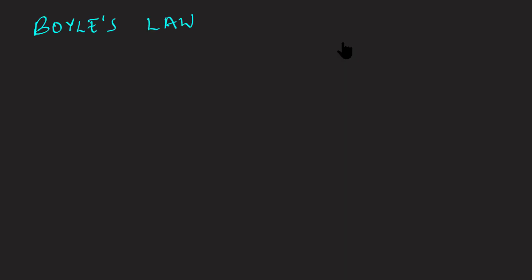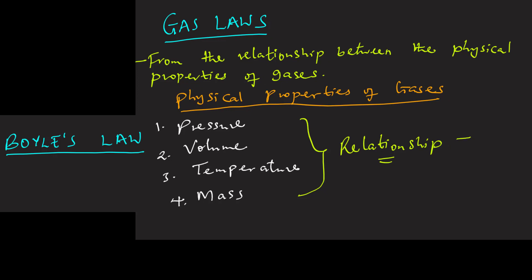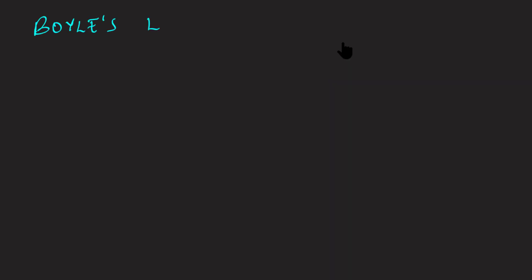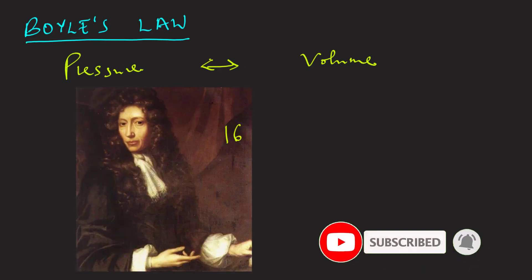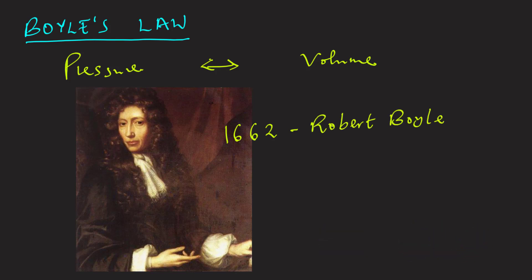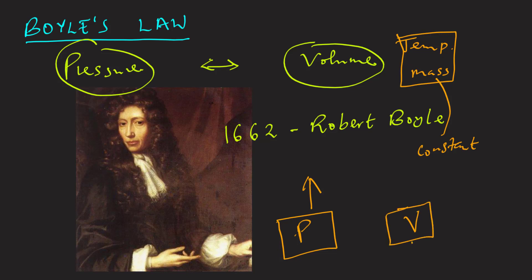Let's start with Boyle's law. As we have already said, various gas laws arise from the relationship between the various physical properties of gases. Boyle's law looks into the relationship between pressure and volume. In the year 1662, a scientist by the name Robert Boyle studied the relationship between pressure and the volume of a fixed amount of gas while holding the temperature constant. Boyle observed that when he increased the pressure of the gas, there was a decrease in the volume, and when he reduced the pressure, the volume increased.